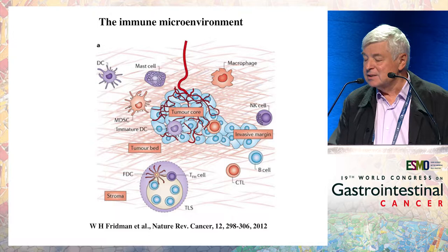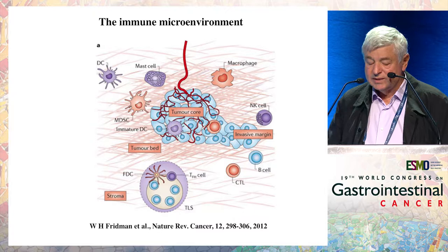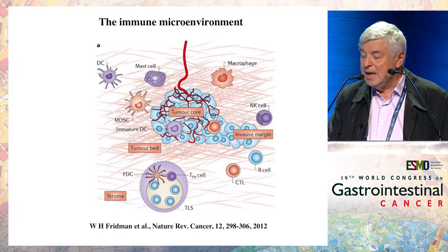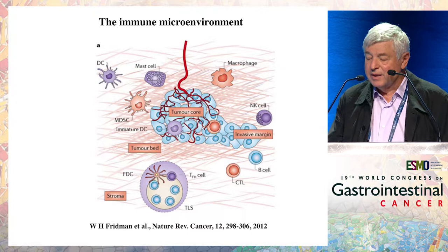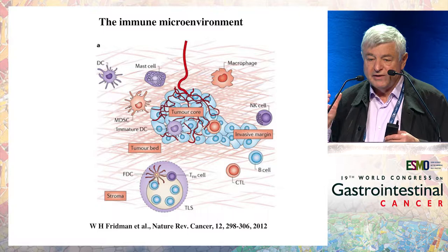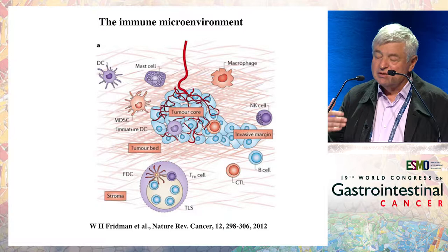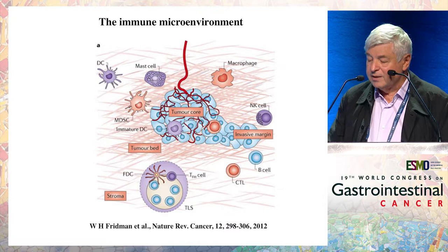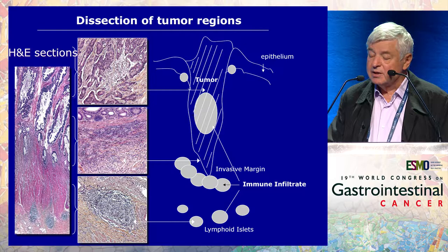All cancers, solid tumors and particularly colorectal cancers, grow in a microenvironment which is made of all cells of the immune and inflammatory system: T-cells, B-cells, NK-cells, mast cells, and dendritic cells. This microenvironment is an organized landscape. You have cells in the center of the tumor core, cells in the invasive margin, and lymphoid islets adjacent to the tumor which behave as tertiary lymphoid structures with mature dendritic cells, T and B-cells — major sites for generating anti-tumor immunity. You also have fibroblasts and endothelial cells which support and nourish the tumor.